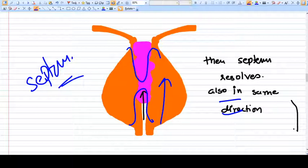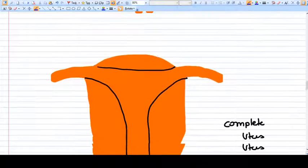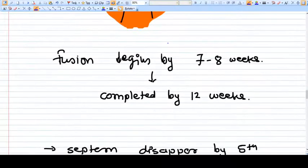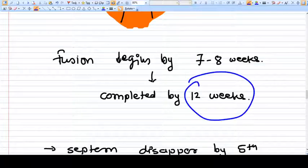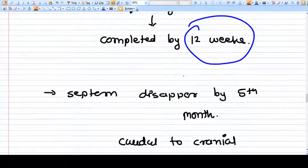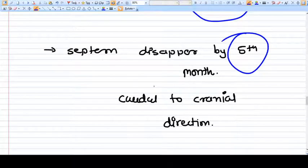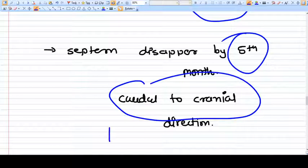This is the complete uterus which has the cavity, the cornua, and this is the cavity of the uterus. Now fusion is completed by twelve weeks. The septum disappeared by fifth month, and the disappearance of the septum, as we have already discussed, is from caudal to cranial, below to upwards.